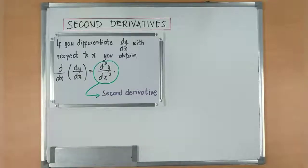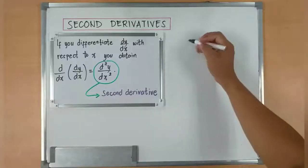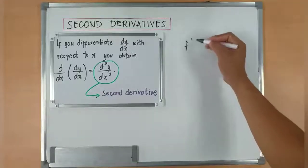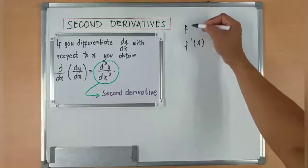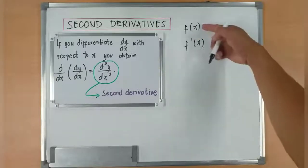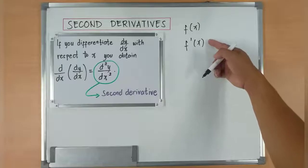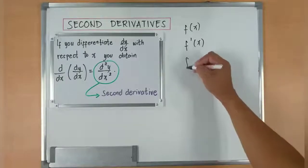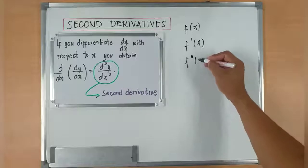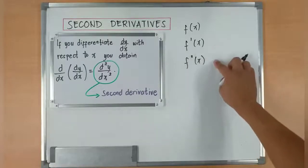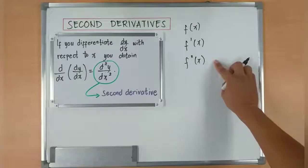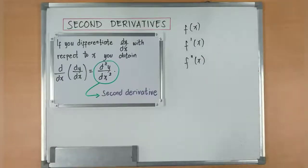There are other ways on how to write second derivative. For example, first derivative is f prime x. So if the function is written like that, the first derivative is f prime x. The second derivative is f double prime x. So these are ways on how to write it. But basically, when we say second derivatives, it is the differentiation of the first derivative.